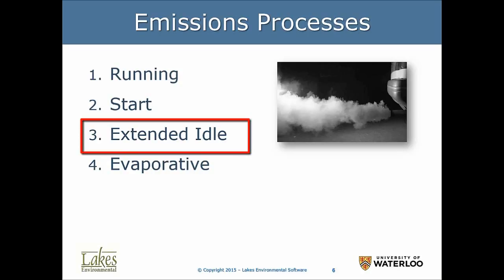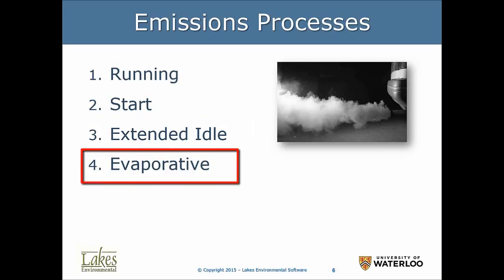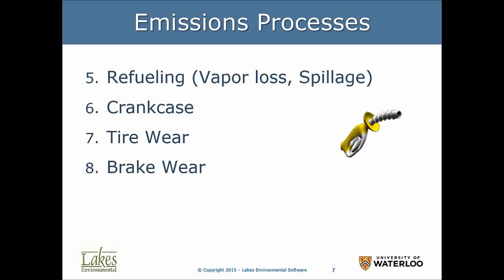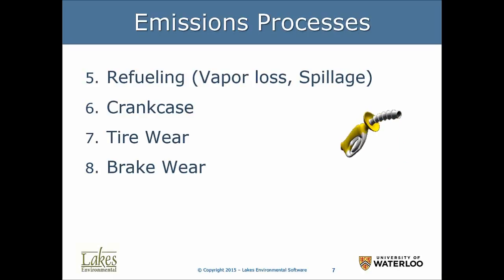We also analyze extended idle — it could be a car idling, but most frequently trucks and buses. There are evaporative emissions related to fuel and oils having the ability to evaporate. Refueling: if your jurisdiction does not have vapor capture, when you refuel your car and gasoline goes into the tank, the tank is empty but full of gasoline vapors. As the liquid goes in, it pushes vapors out to the atmosphere — we must account for that. Crankcase emissions come from the engine oil used for lubrication, which gets very hot and generates vapors. Some of those vapors escape — we call those crankcase emissions.